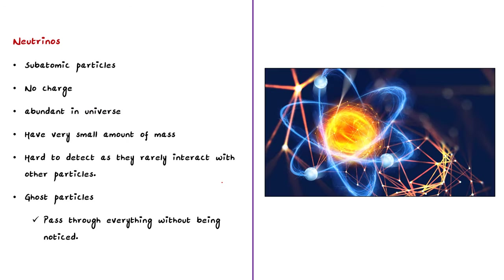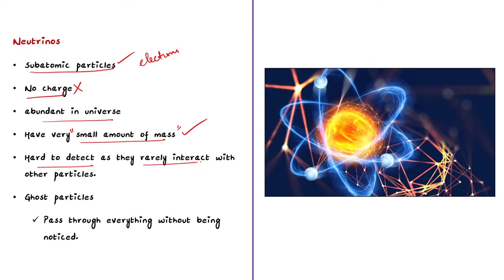Neutrinos are tiny subatomic particles similar to electrons but they have no electric charge. They are incredibly abundant in the universe, with trillions of neutrinos passing through our bodies every second. At first neutrinos were thought to have no mass, but later scientists discovered that they have a very small amount of mass. Neutrinos are incredibly hard to detect because they rarely interact with other particles. Due to this rare interaction, most neutrinos pass through everything without being noticed — this is why they are called ghost particles.